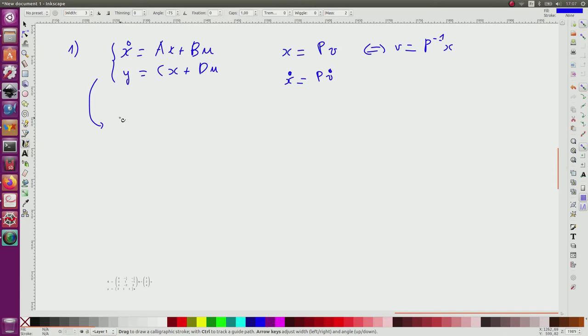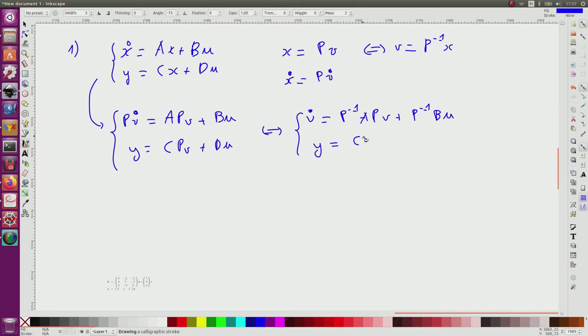So I take this equation and I get here PV dot equal A times x, but x is PV plus Bu, and here y equals Cx but x is PV plus Du. Now I will isolate V, and I get V dot equal P inverse... and here I will have the same. So y equals CpV plus Du. So this is the new formulation.